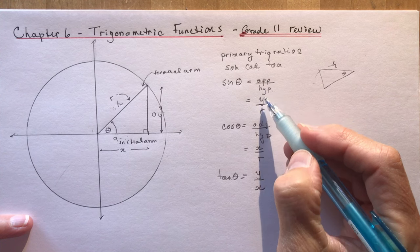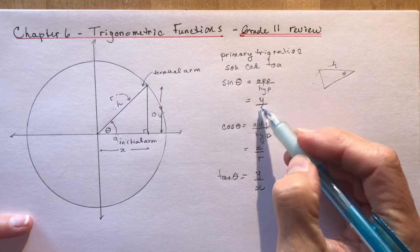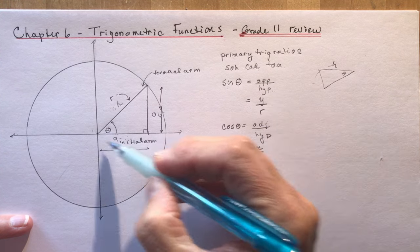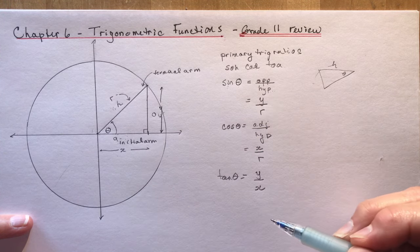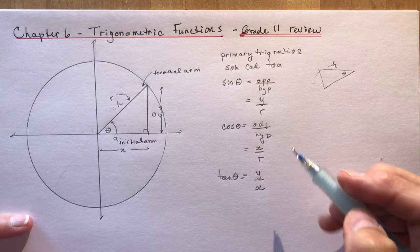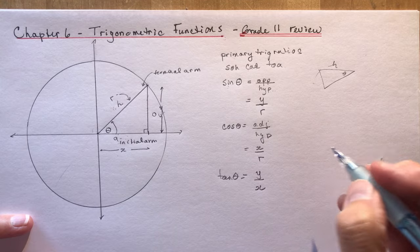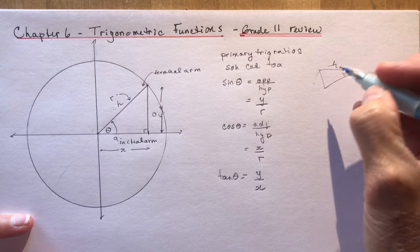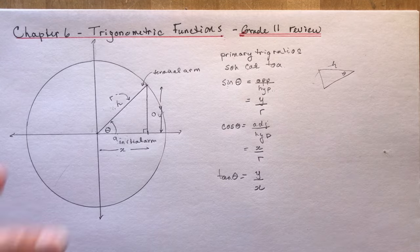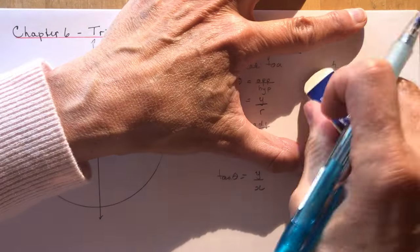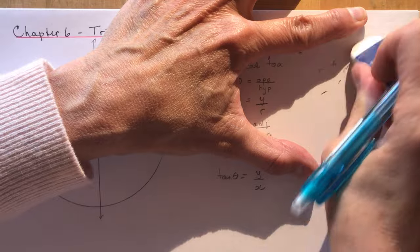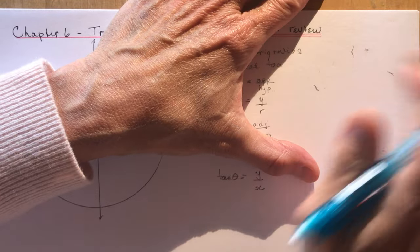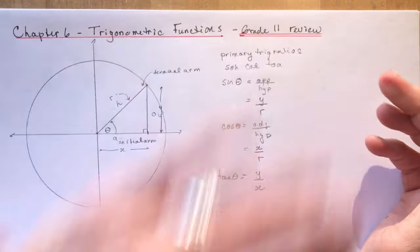We also had reciprocal trigonometric ratios — and that's a mouthful to say. These are one over each primary ratio.